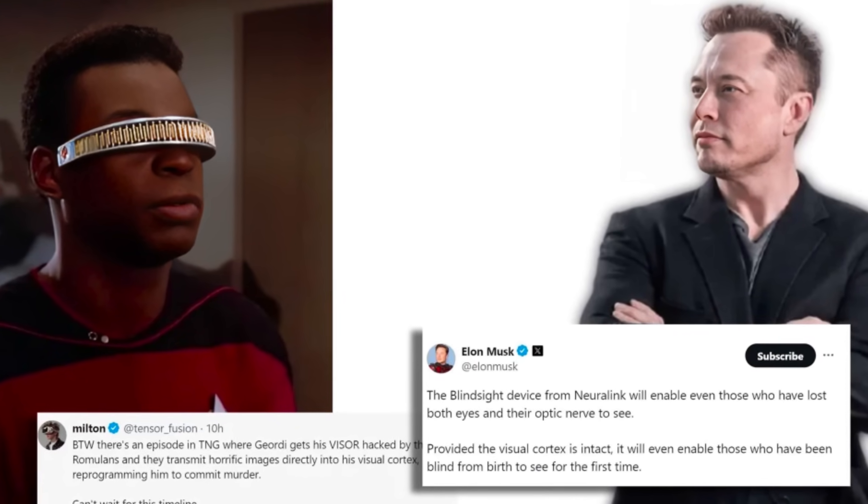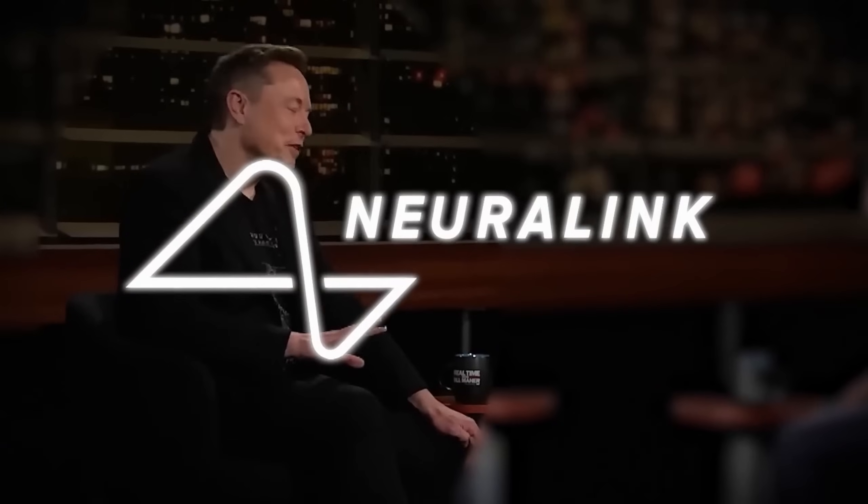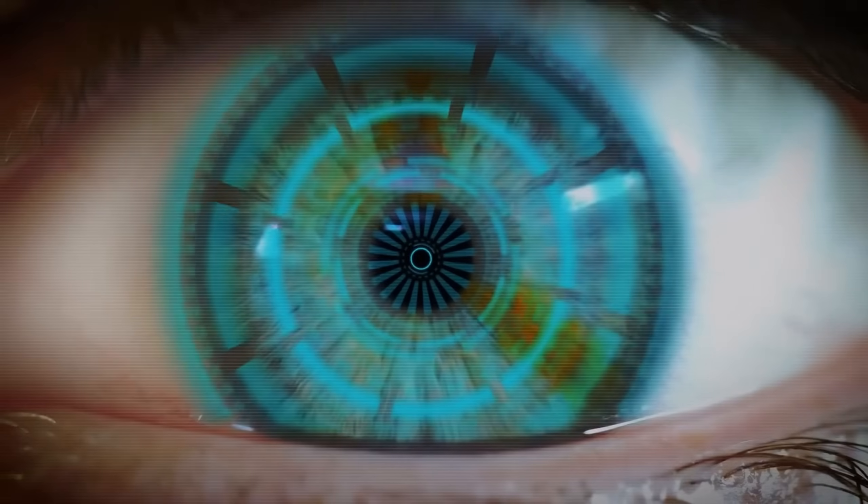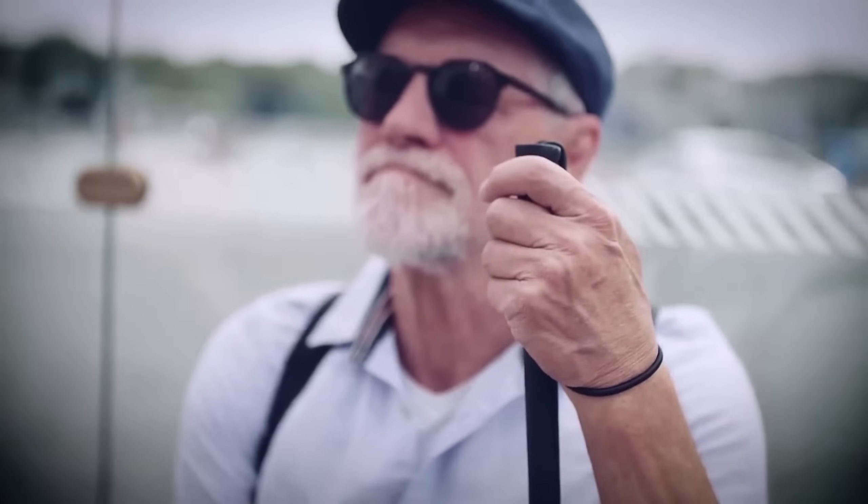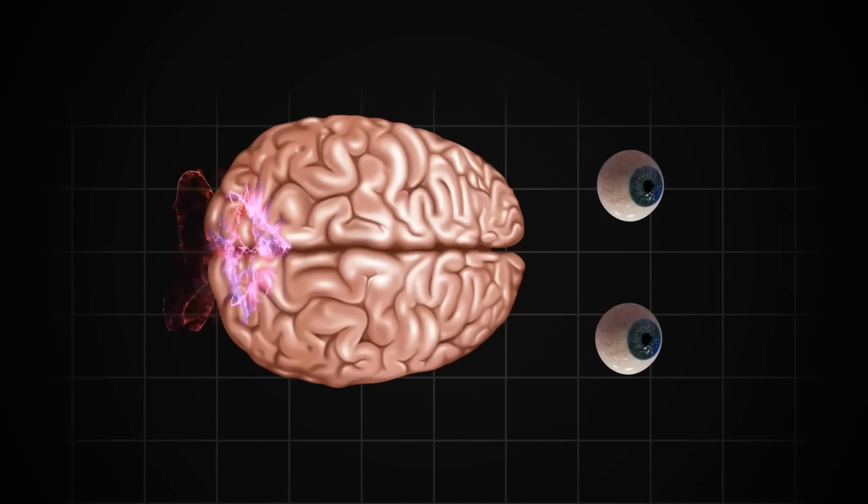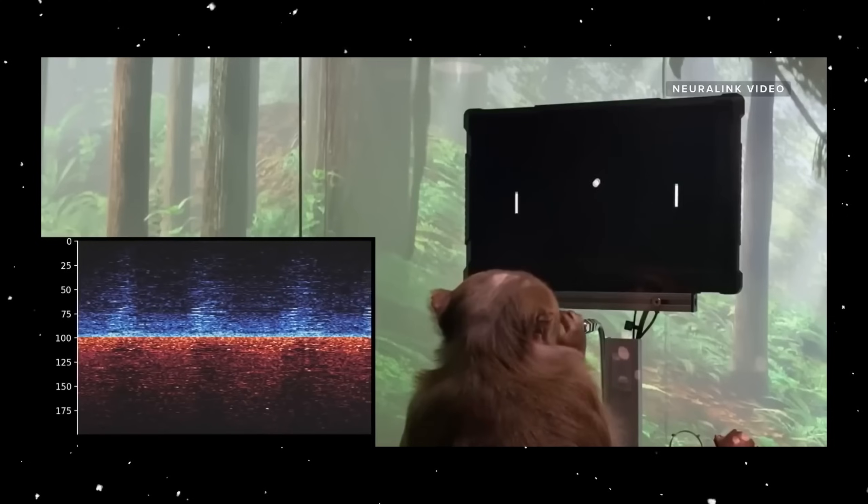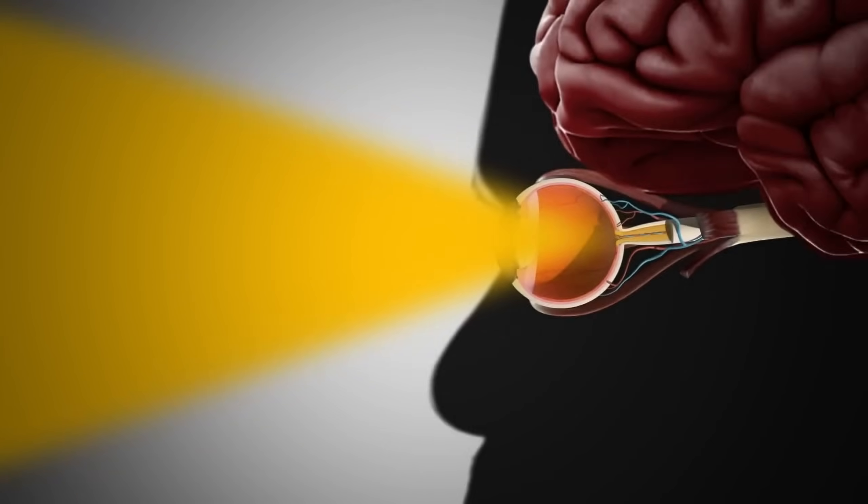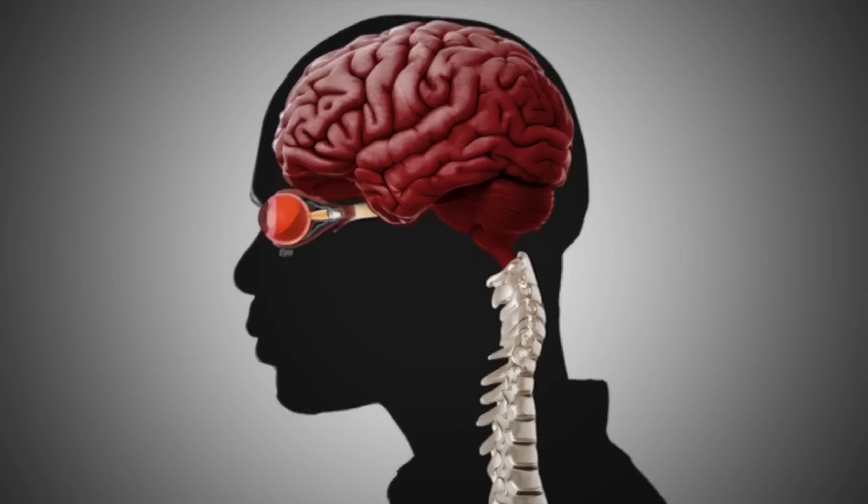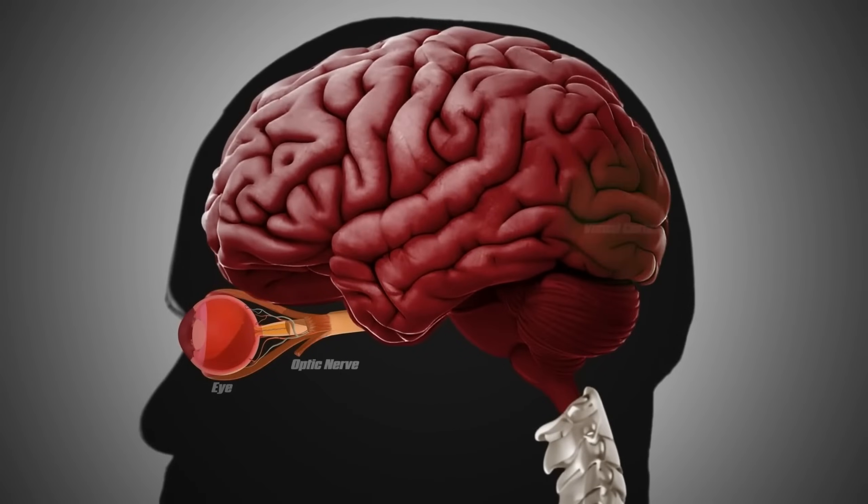Remember the Blindsight product Elon mentioned on X? That's also in Neuralink's plans. Blindsight could help blind people see, even those born blind. Right now, they are testing it on animals to make sure it works well before they try it on people. Blindsight tries to help blind people by targeting the back of the brain, called the visual cortex, which is part of seeing.